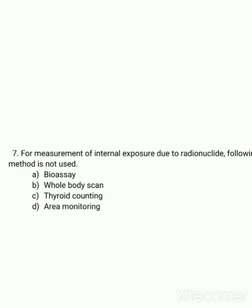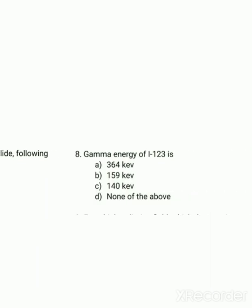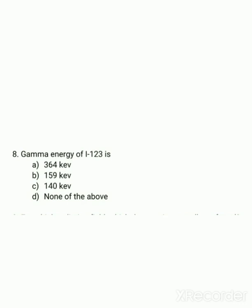The seventh question: for measurement of internal exposure due to radionuclides, which method is not used? For calculation of internal exposure, bioassay is done; whole body scan can be used; and thyroid counting can also be used. However, area monitoring is specially used to measure external exposure — we cannot measure internal exposure using area monitoring. So the exact answer is area monitoring.